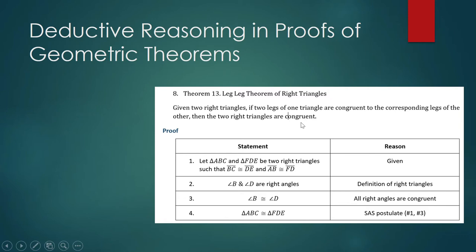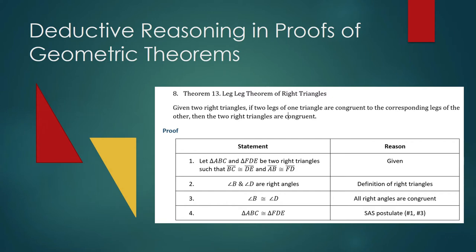Just to get you acquainted with the theorem: given two right triangles, if two legs of one triangle are congruent to the corresponding legs of the other, then the two right triangles are congruent. So why is this an example of deductive reasoning?